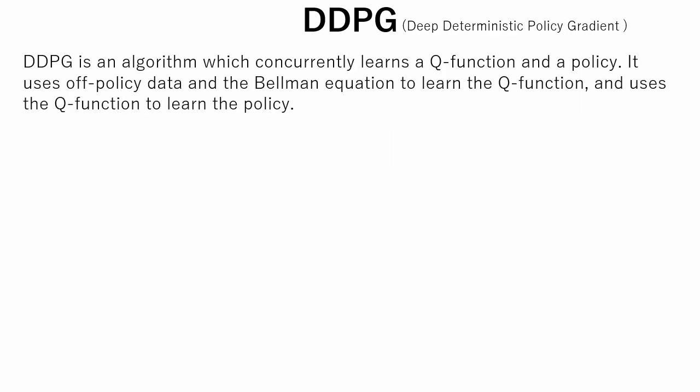DDPG is an algorithm which concurrently learns a Q function and a policy. It uses off-policy data and the Bellman equation to learn the Q function, and uses the Q function to learn the policy. Now, I will explain some facts behind the two parts of DDPG: Learning a Q function, and learning a policy.